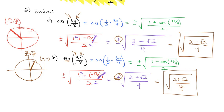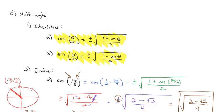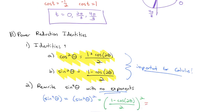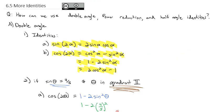This video looked at three identities: the half angle identities, the power reduction identities, and the double angle identities. These identities are important to help us simplify, solve, evaluate, and prove trig properties. Take a look at practicing these on the homework, and let me know if you have any questions.